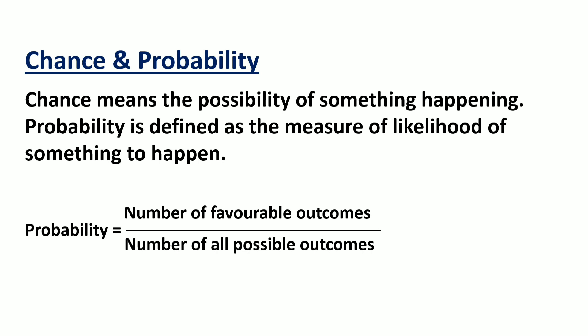And the last one is can happen but not certain. Getting an odd number on rolling a dice. The probability of such events is in between 0 and 1. So all of you understood what is probability, what is chance?